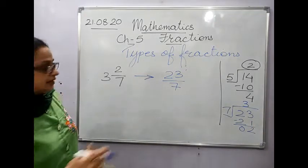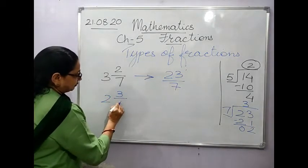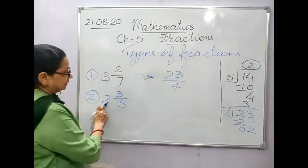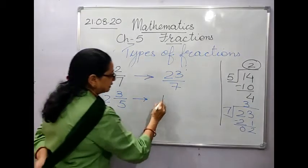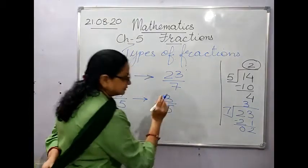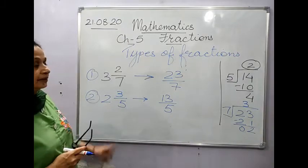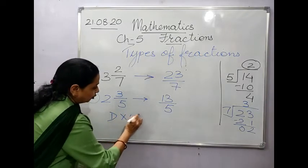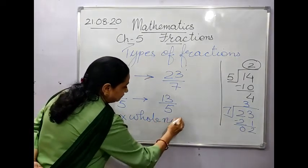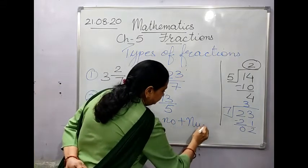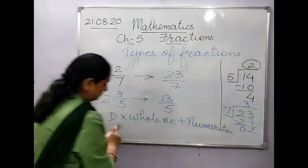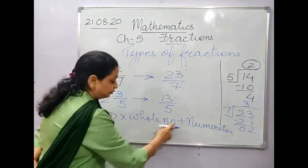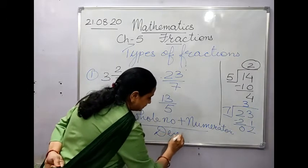Another example: 2 and 3/5. Multiply the denominator by the whole number: 5 × 2 = 10, then add the numerator: 10 + 3 = 13. So the answer is 13/5 and the denominator remains the same. The formula is: multiply the denominator with the whole number, add the numerator, and keep the denominator as it is.